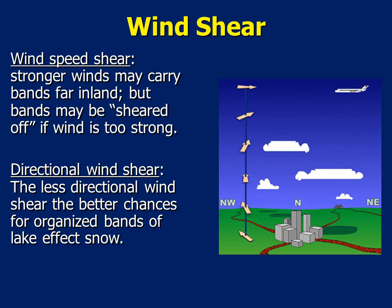Wind shear is also an important element when it comes to LakeFX snow bands forming. Wind shear is the change of wind speed or direction with height. Light winds with little directional wind shear create better chances for organized bands of snow to develop off of either Lake Tahoe or Pyramid Lake. The next couple of slides will explain which wind directions occurred on November 9th and 10th that resulted in lake effect conditions near Lake Tahoe and Pyramid Lake.